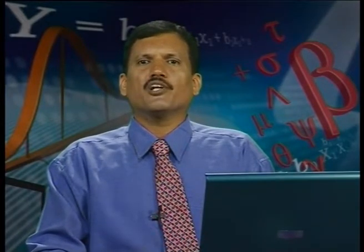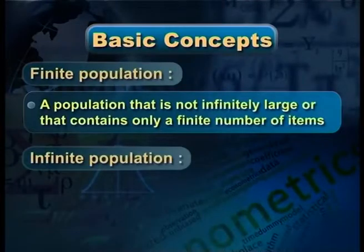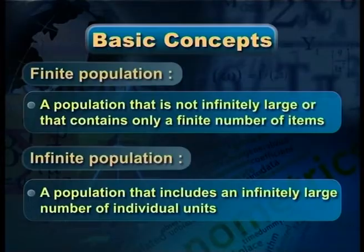For example, in a classroom, we take the total students — we can count them. Also, in a country, total population can be counted. This is called finite population — it is limited and we can express it as a number. But infinite population cannot be counted individually; it includes an infinitely large number of individual units. For example, a forest and a bag of rice are examples of infinite population.